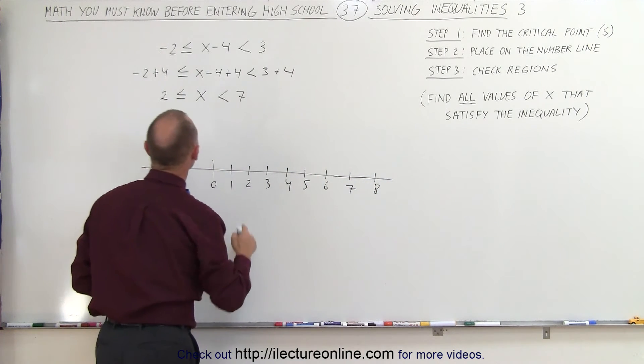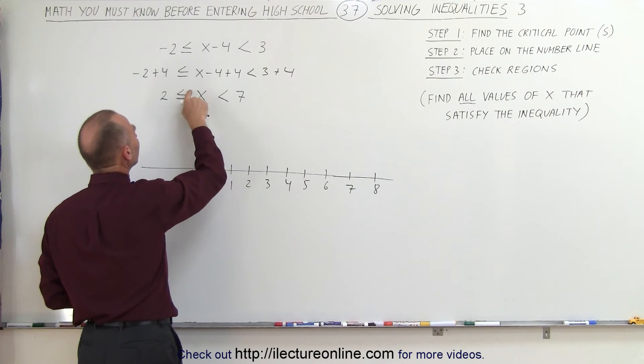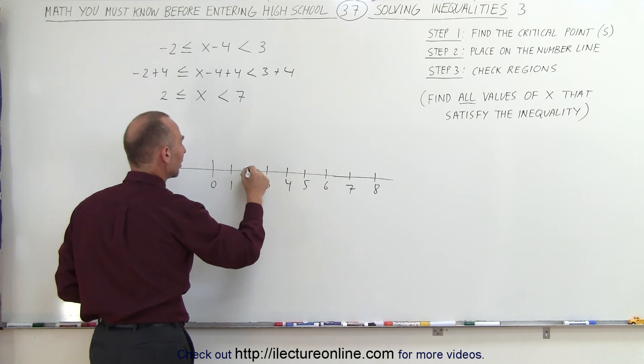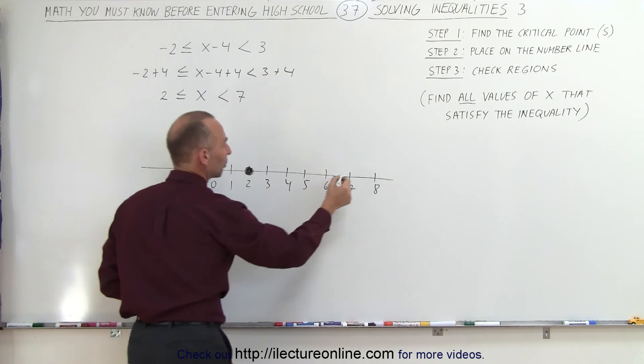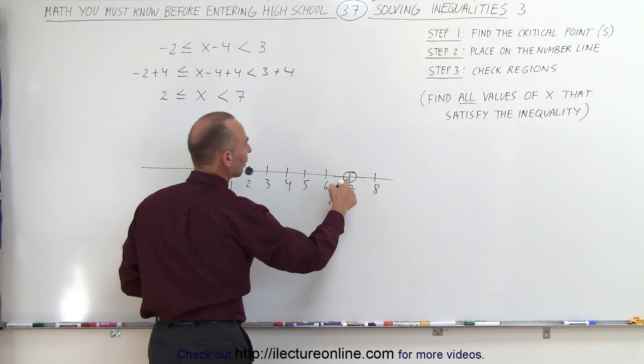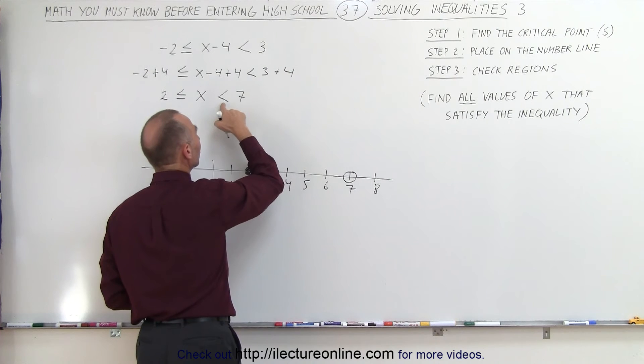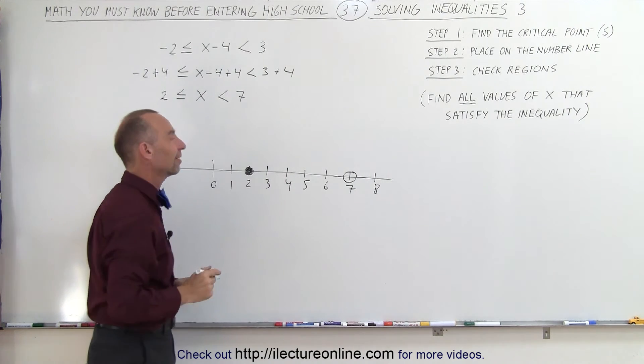Notice that x is greater than or equal to 2, so 2 is a critical point, but we have to fill in the little circle because it includes 2 as an answer. And then we have to put another circle around 7, we keep it hollow, we don't fill it in because 7 is not included in the answer because it doesn't say equal to here, only less than 7.